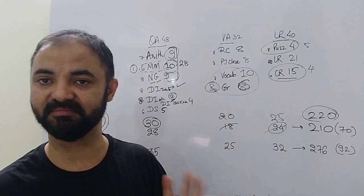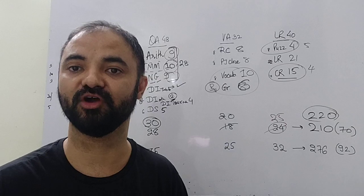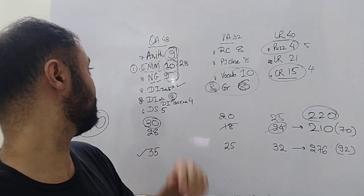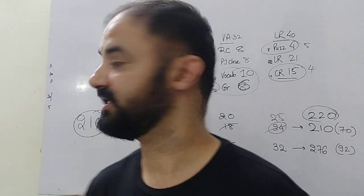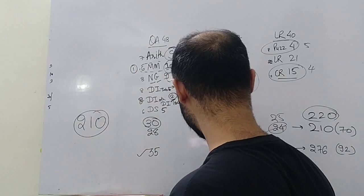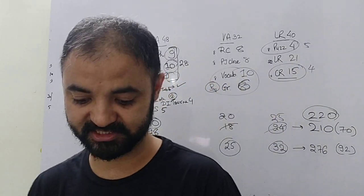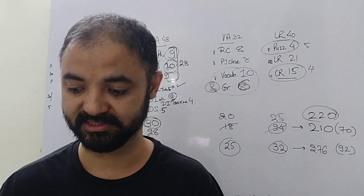Quant is as medium as CAT level. Not very high, not very low. Many questions on modern maths which you need to focus on. Attempt 25 and 32 attempts for the verbal section if you want to clear the cutoffs.